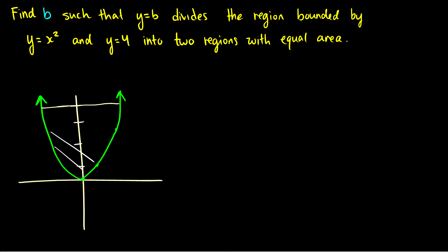And we want to find some line y equals b. So I'm just going to make a dotted line somewhere where the area up top a1 is equal to the area down at the bottom a2. So how do we find this line?